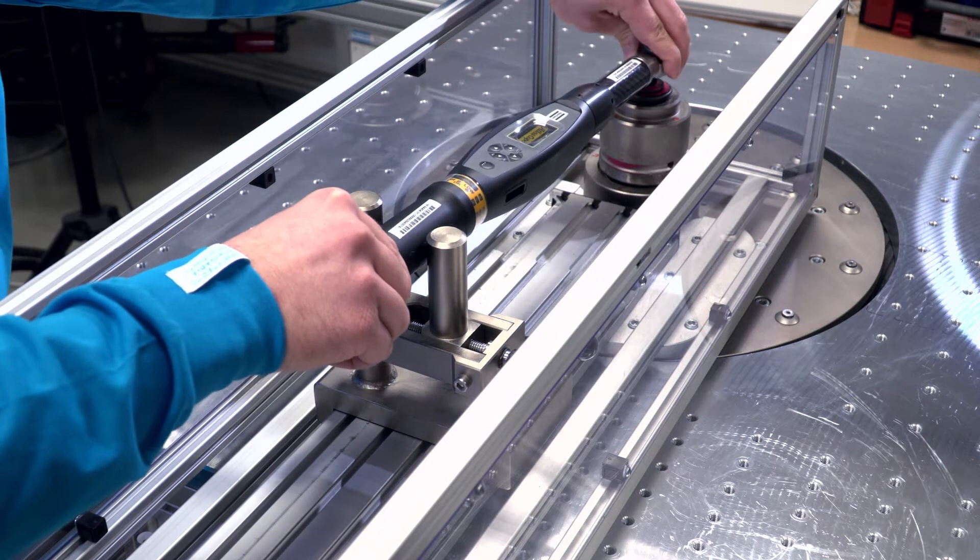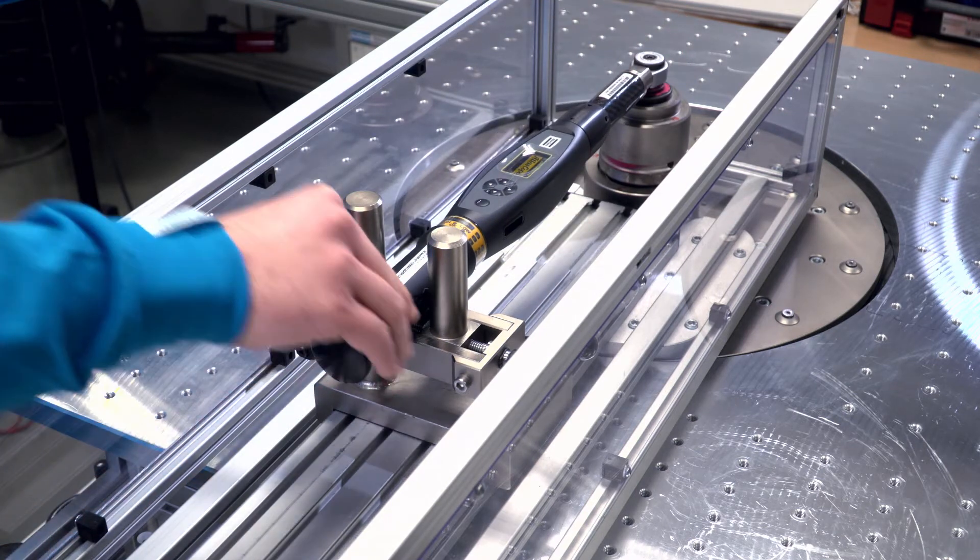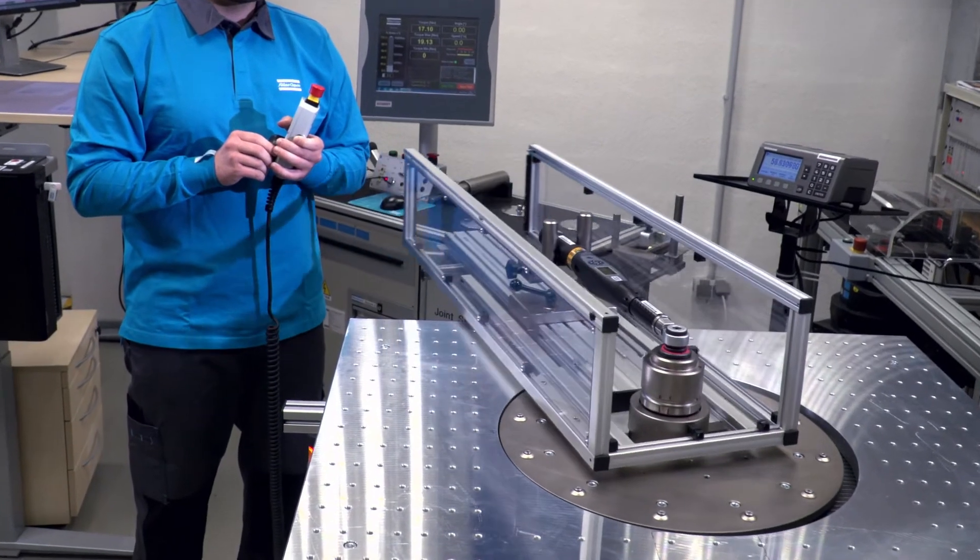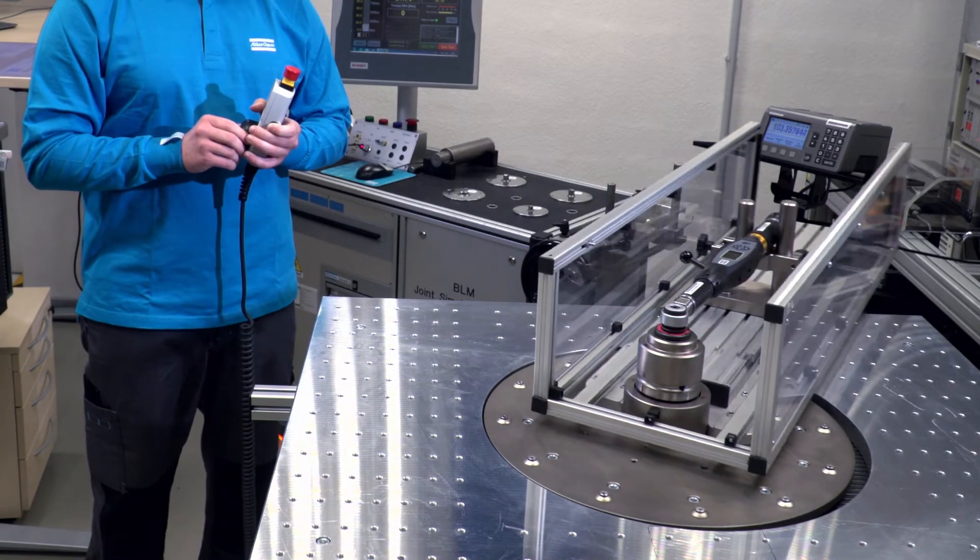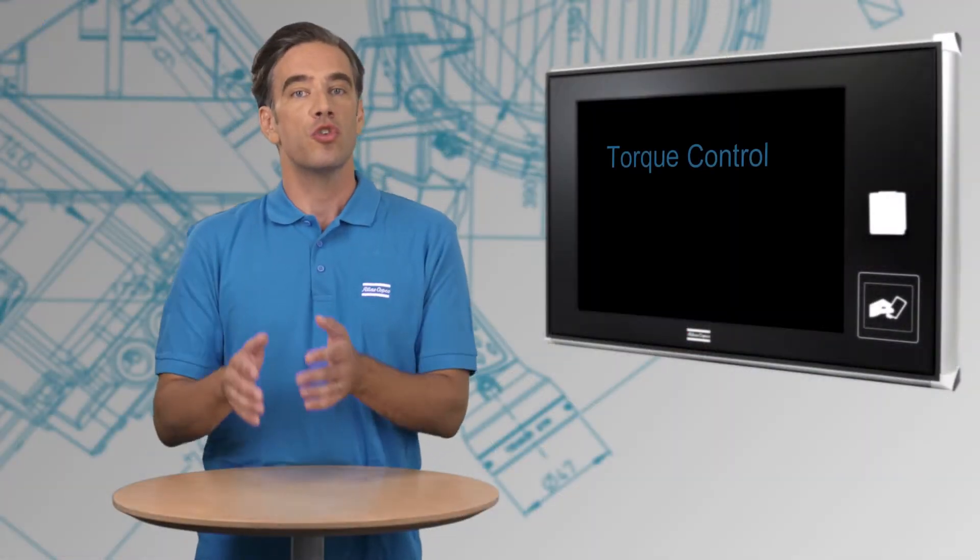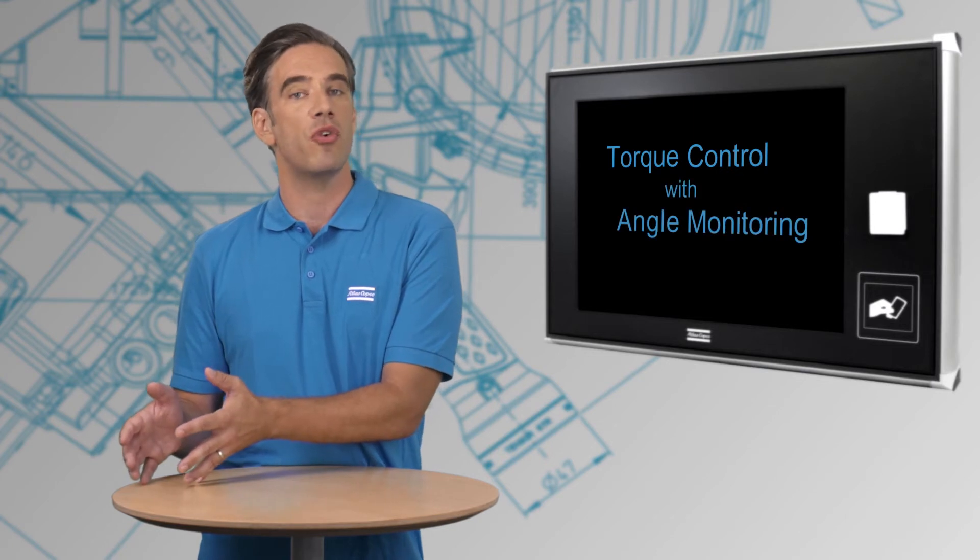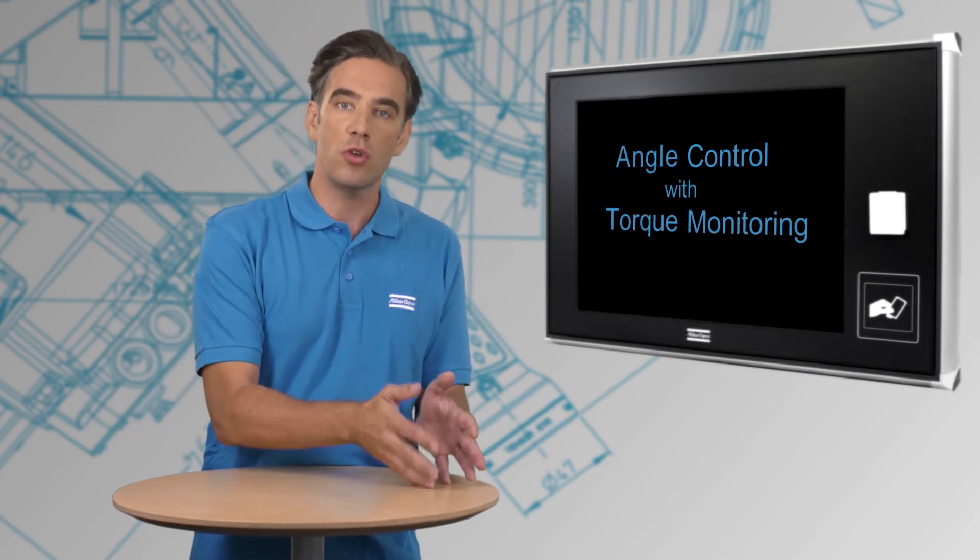These measurements support each other in the tightening process where one of them is controlling the final stage of the tightening and the other one is monitoring. We call this torque control with angle monitoring or angle control with torque monitoring.